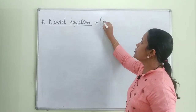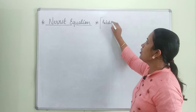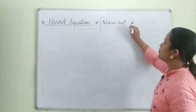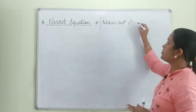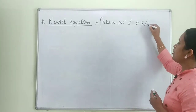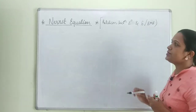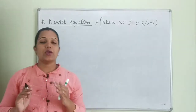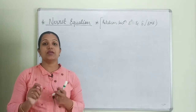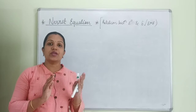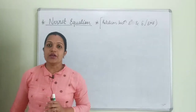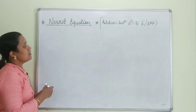So what does the Nernst equation represent? The Nernst equation represents the relation between electrode potential at standard condition and electrode potential at any given concentration. In other words, it gives the relation between EMF at standard condition and EMF at any concentration. Today we are going to study the Nernst equation.